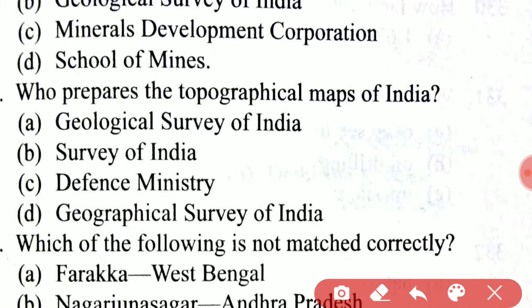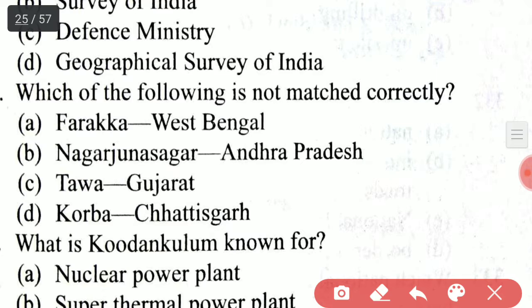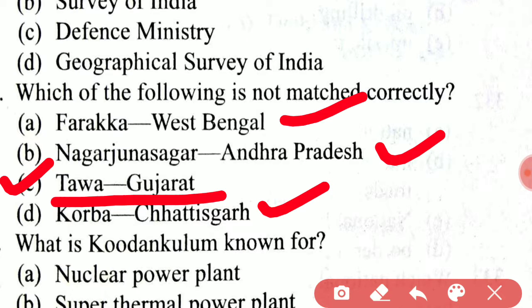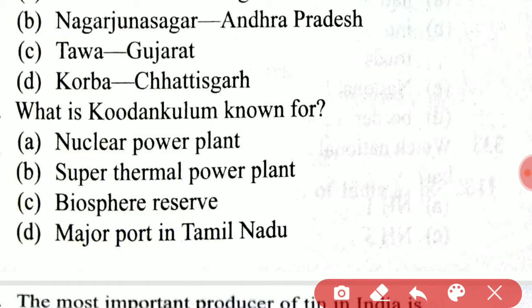It is the Survey of India that prepares the topographical maps of India. Next, which of the following is not matched correctly? The right option is option C — these are not matched correctly. What is Kudankulam known for? Kudankulam is a nuclear power plant.